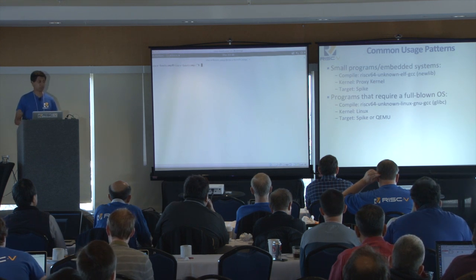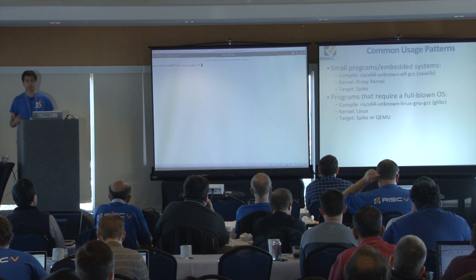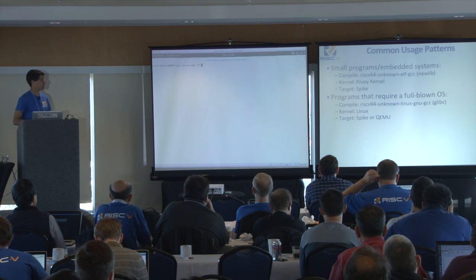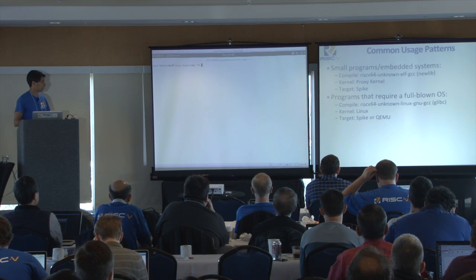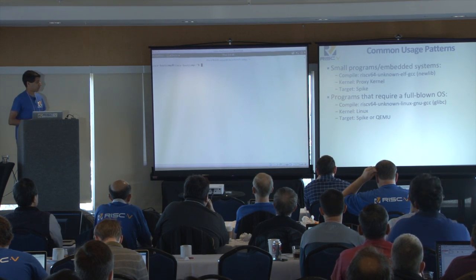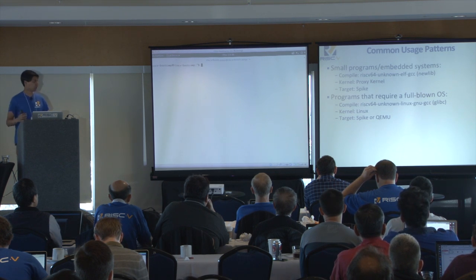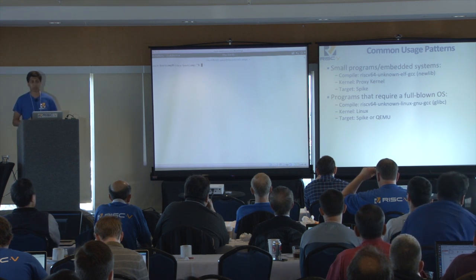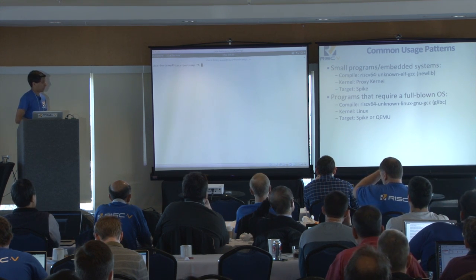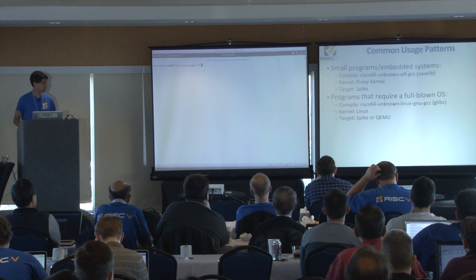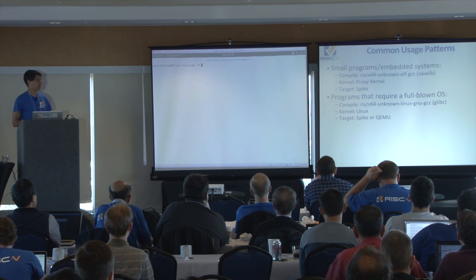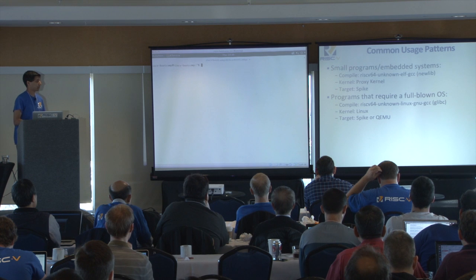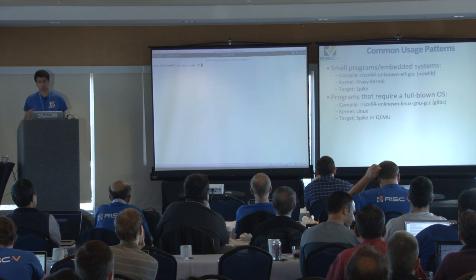There are two main usage patterns when working with these tools. If you're working with small programs for an embedded systems-type application and want to run on a simulator keeping cycle count low, you'll use the riscv-unknown-elf GCC toolchain working against NewLib, run the proxy kernel, and run that on top of Spike. On the other hand, if you want a full-blown operating system, compile with riscv64-unknown-linux-gnu-gcc linking against glibc, run on top of the Linux kernel, and we can run that in Spike or QEMU.